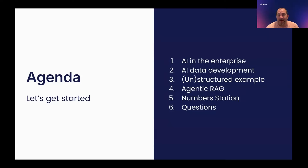I'm excited to share information on today's topic: how do we put together both unstructured and structured data in our RAG pipelines. I'll start with a little bit of context on high-level trends and the core tenants of AI data development as it relates to enterprise AI. Then we'll get into unstructured and structured data pipelines, and Agentic RAG, which is still early in adoption but really powerful. I'm excited to have Inez here from NumberStation, as they're certainly at the forefront of that.